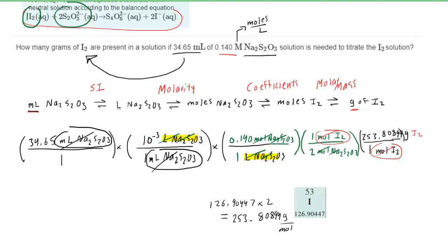So the last step is to pick up our calculator and very carefully type this all in to get our final answer. And when you do that, you should get approximately 0.616 grams of iodine. And that is indeed the correct answer.